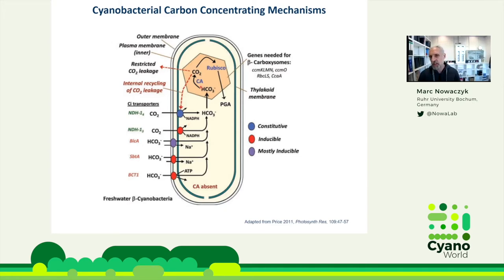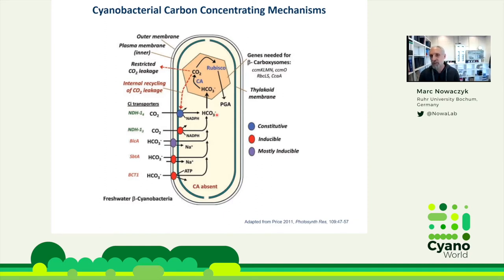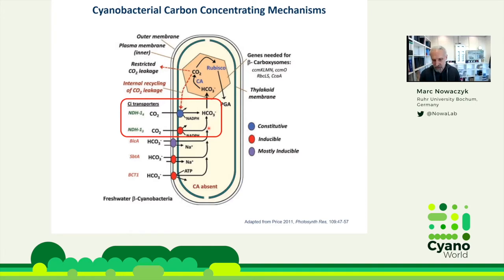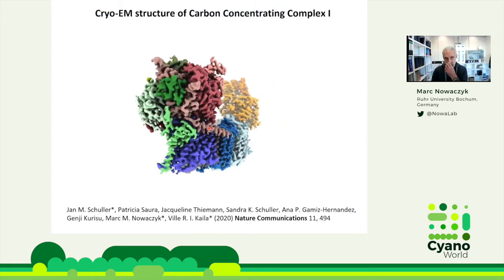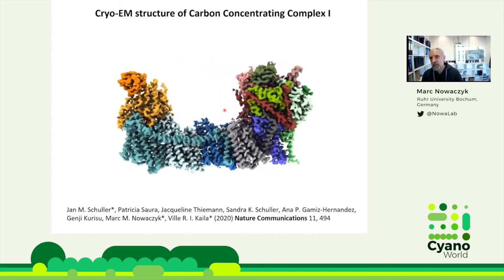You cannot just express a carbonic anhydrase in the cytoplasm, because this would just convert the higher amount of bicarbonate back into CO2, not CO2 into bicarbonate. Because the concentration of bicarbonate is much higher, more energy is needed to catalyze the reaction in this direction. This seems to be done by this alternative version of Complex I, the so-called NDH-1 complex. We were interested in understanding the mechanistic details of this, and we were able to solve the structure of this carbon-concentrating Complex I, again in collaboration with Jan Schuller.